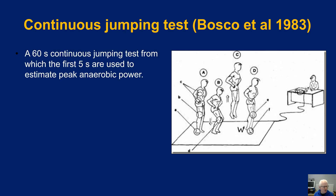In this continuous jumping test, there is a 60-second version, which we'll look at in another session on anaerobic capacity testing, down to the five-second version, which is used as an estimation of anaerobic power. The diagram shown here is from the original Bosco paper and shows the participant doing these repeat jumps, with the aim of doing as many jumps as possible.